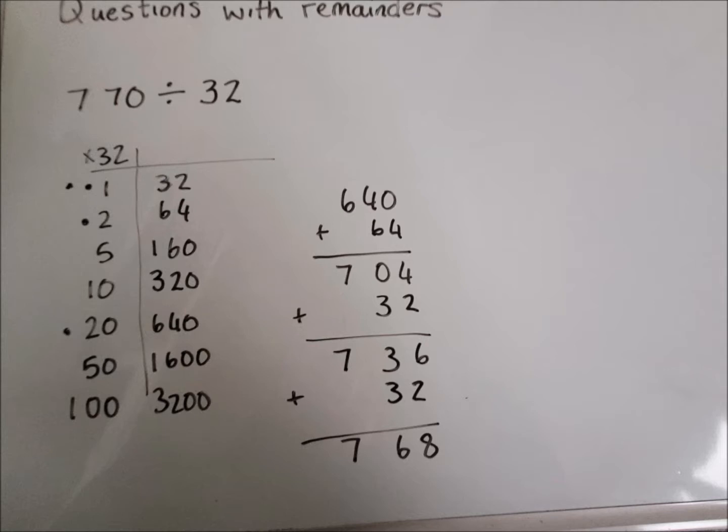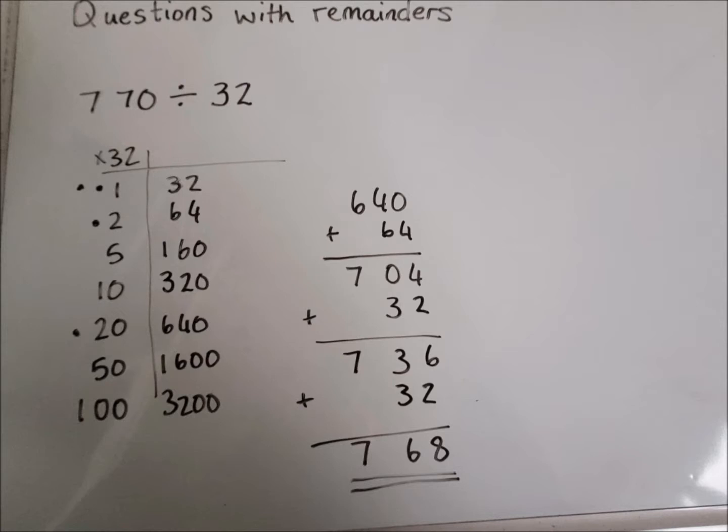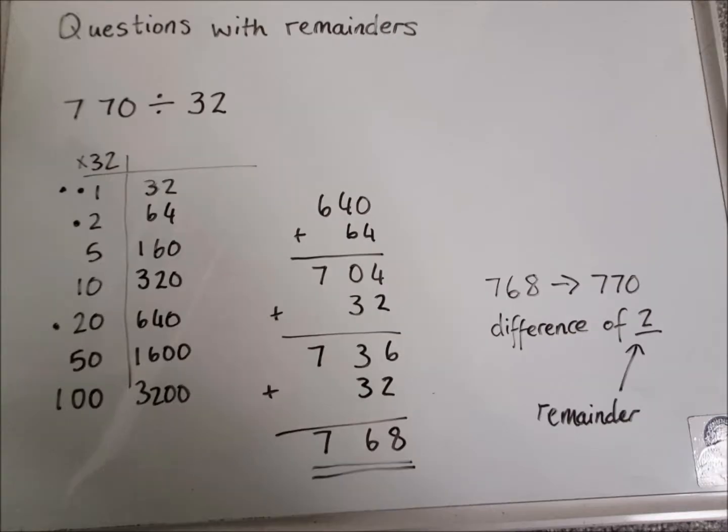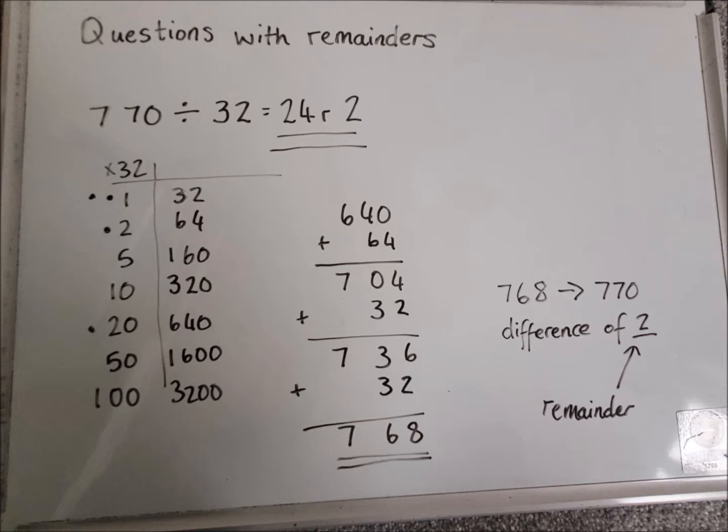And I get to 768, which is close to my target number, but it's not quite bang on. If I add on another 32, which is my smallest option there, I'm going to be over my target number, which I can't have. I've got to be under the target number of 770. So that means that's going to have to just be the first part of my answer. What I then have to think about is what's the difference between 770 and 768? So the difference is 2. So that difference becomes my remainder. Just as before, I look back to my coin card at the dots or stars that I've circled at the side to get the first part of my answer, which is 24. And then that remainder of 2 goes on at the end. So the answer for this is 24 remainder 2.